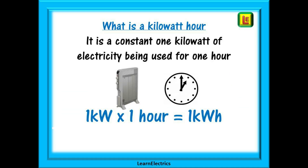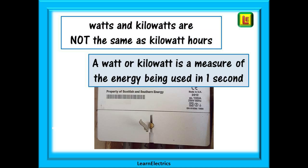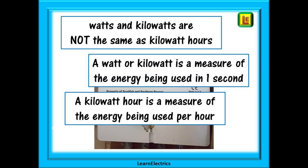First of all, what is a kilowatt hour? It is one kilowatt of energy being used constantly for one hour. Watts and kilowatts are not the same thing as kilowatt hours — nearly, but not quite. A watt or kilowatt is a measure of the energy being used in one second, whereas a kilowatt hour is how much energy has been used in one hour.